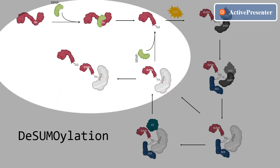Sumoylation is a reversible process by the removal of the SUMO modifier from the target protein. SUMO proteases have a dual function: they are involved in the maturation process of the SUMO precursor and in the hydrolyzing of peptide bonds to release SUMO from target proteins. In yeast, two SUMO proteases have been found — ubiquitin-like protease 1 and 2. These enzymes have different specificities and distributions in the cell; for instance, ULP1 is mainly distributed around the nucleus, while ULP2 is unevenly distributed in the cytoplasm.